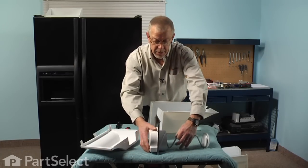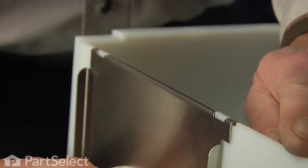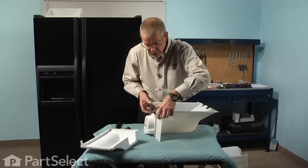Now we'll take the auger assembly, slide that into the opening, and we'll lift the front up enough that we can hook the tabs into some cutouts on the front of the bin, and that helps us align it.